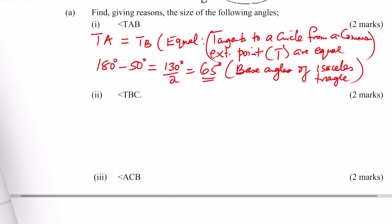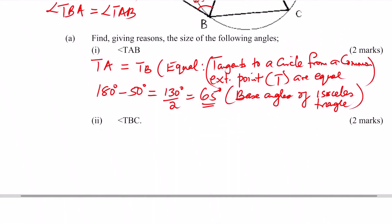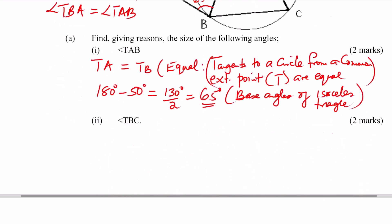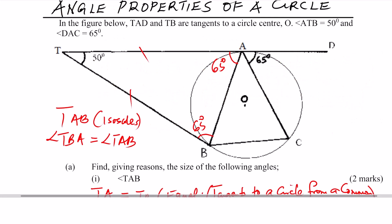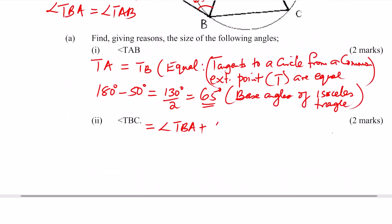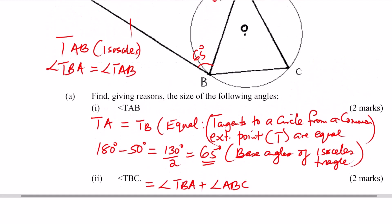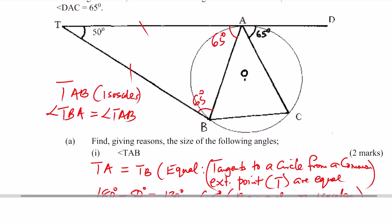Now let's find angle TBC. Angle TBC includes two angles: angle TBA plus angle ABC. So we need to find angle ABC.